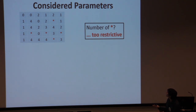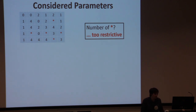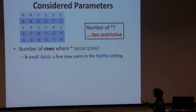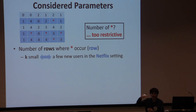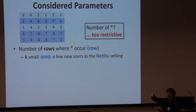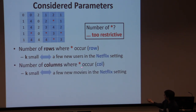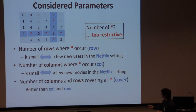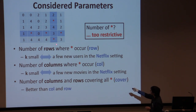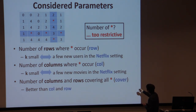The most basic parameterization is by number of missing entries, but this is very restrictive — usually you will have many missing entries. So instead we looked at the number of rows where missing entries occur. This can be motivated: if your parameter is small, you have only a few rows where you don't know some stuff — like in the Netflix setting, a few new users added to your database. You can do the same for columns, or even better: parameterize by the number of columns and rows which together cover all the missing entries. In our initial work we considered all three.